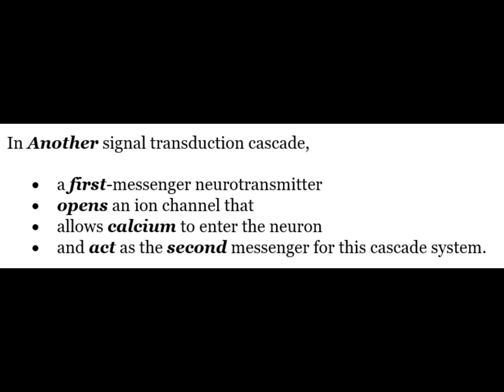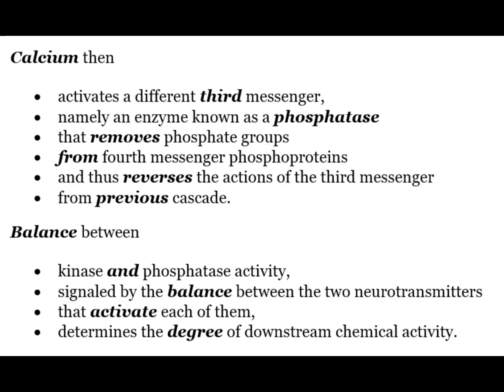In another signal transduction cascade, a 1st messenger neurotransmitter opens an ion channel that allows calcium to enter the neuron and act as the 2nd messenger for this cascade system. Calcium then activates a different 3rd messenger, namely an enzyme known as a phosphatase, that removes phosphate groups from the 4th messenger phosphoprotein — reversing the action of the 3rd messenger from the previous cascade.